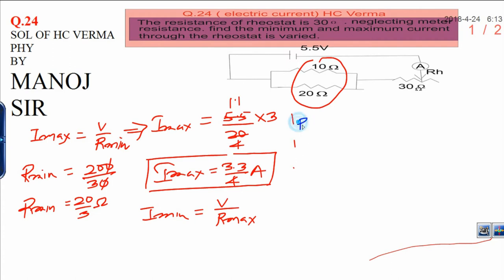Maximum resistance R maximum means you have to include the resistance of the rheostat along with this, because I need the maximum resistance. That's why 20 by 3 is the combination of these two, plus 30 ohm I am taking from the rheostat. That will be 90, that is 110 ohm over 3. This is the maximum resistance.